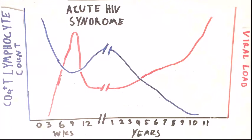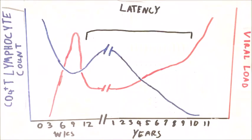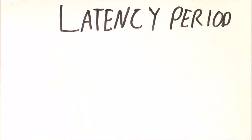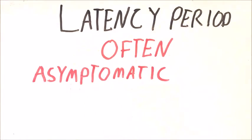After a while, there is a balance between the destruction and replication of the virus in the body. This is the latency period of HIV and often the person is asymptomatic. It lasts for about 8 to 10 years.